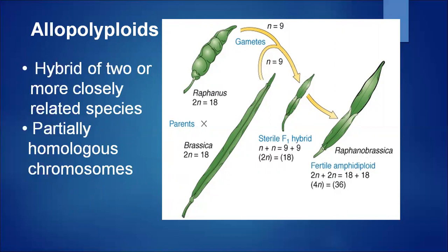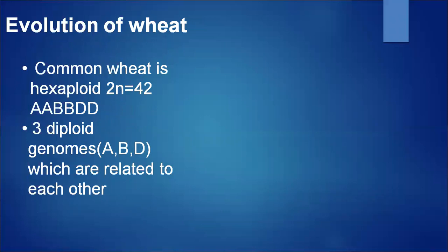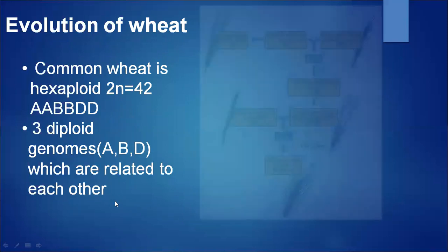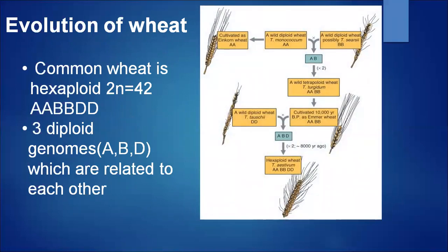In allopolyploids, pairing is autosyndetic type — maternal pairing — in contrast to allosyndetic pairing. Another classic example of allopolyploidy is the evolution of wheat. Common wheat is hexaploid, 2N=42, with genotype AABBDD. Three diploid genomes A, B, and D are present, which are related to each other.